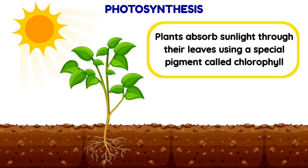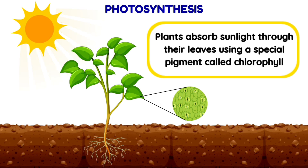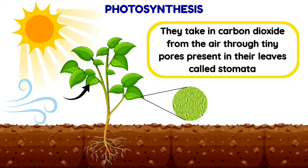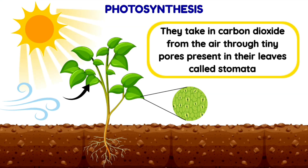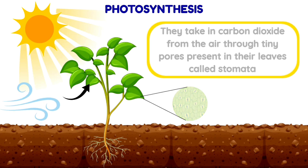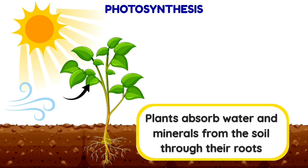During the process of photosynthesis, plants first absorb sunlight through their leaves using a special pigment called chlorophyll. They take in carbon dioxide from the air through tiny pores present in their leaves called stomata.